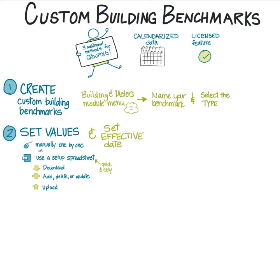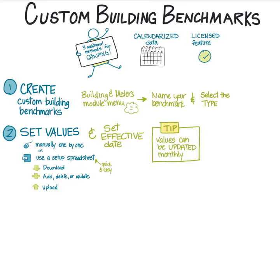Next, select the values for your buildings and their effective dates. You can set the values one at a time in the application, or you can use a setup spreadsheet. If you have more than four or five buildings to set values for, it will be quicker to download the spreadsheet, fill in the values, and upload it back to EnergyCap. You can update these values monthly if needed.